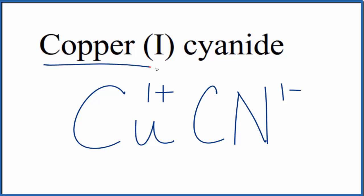So copper, that's a metal, it's a transition metal, and then cyanide, that's a group of nonmetals. Metal and nonmetals, this is going to be an ionic compound. So we need to make sure these charges balance.